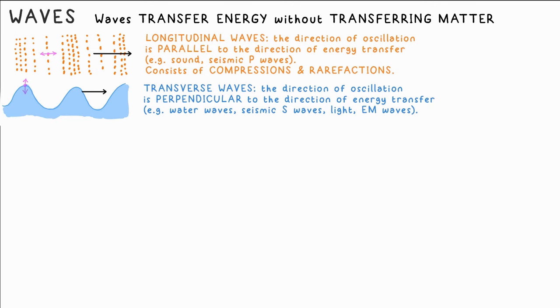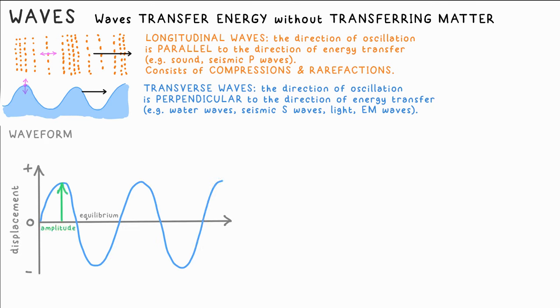We can represent any wave, including longitudinal waves, like this. We call this a waveform. Displacement is at the y-axis, basically just how far the particles have oscillated from their original position, and it can be either distance or time on the x-axis.